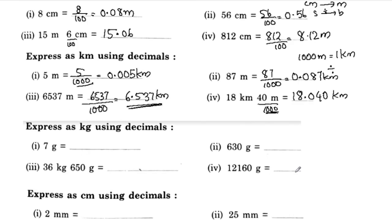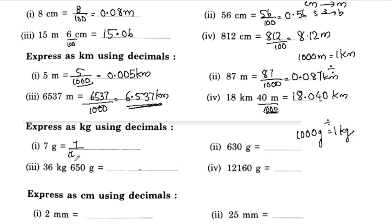Let's put these decimals. 1000 grams is 1 kilogram. If gram is smaller than kilogram, then division: 7 grams is 7 by 1000, which is equal to 0.007 kilogram.